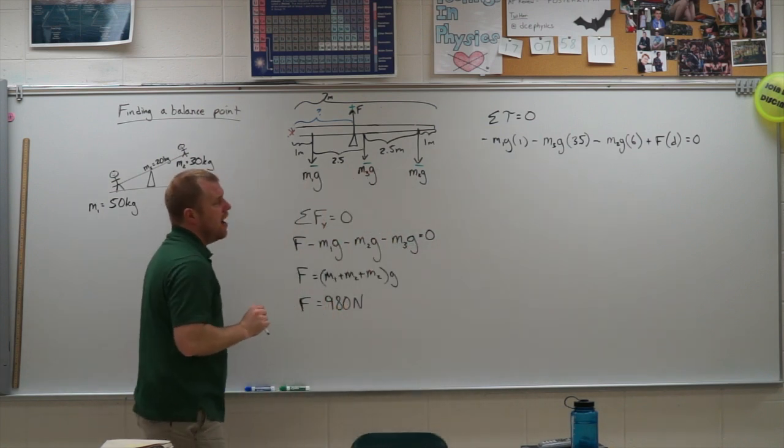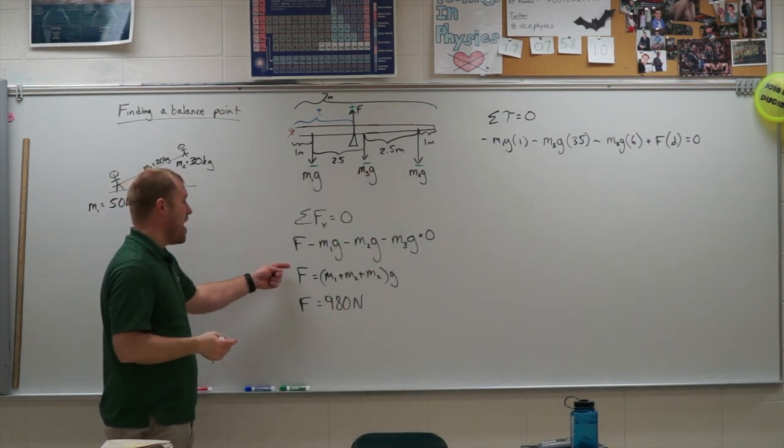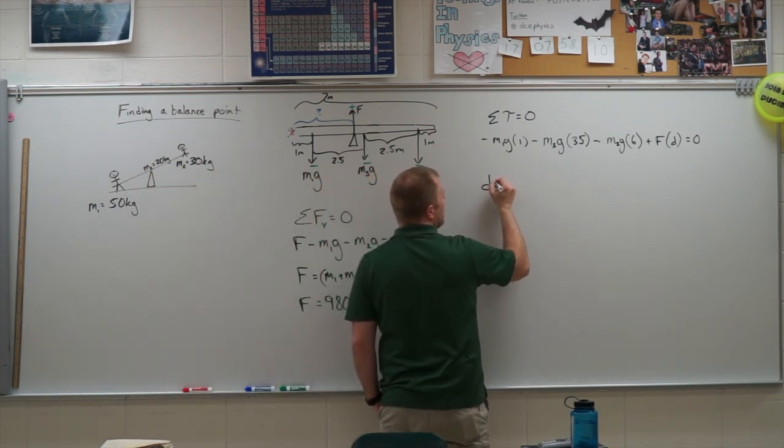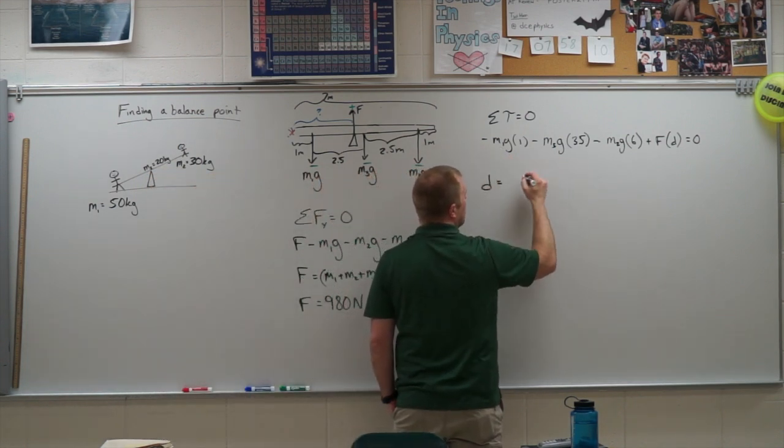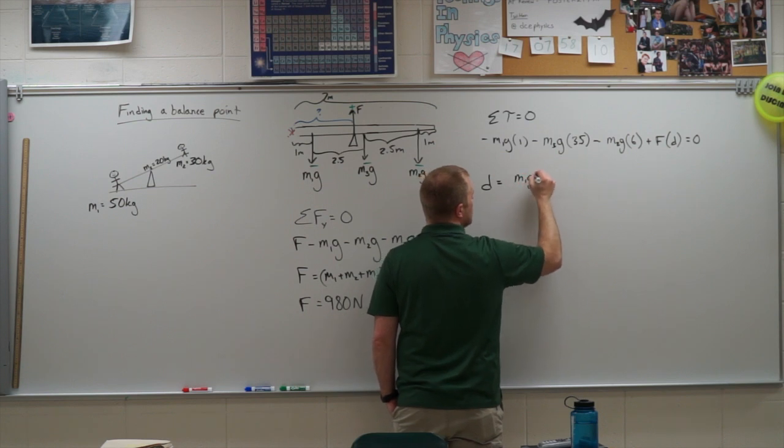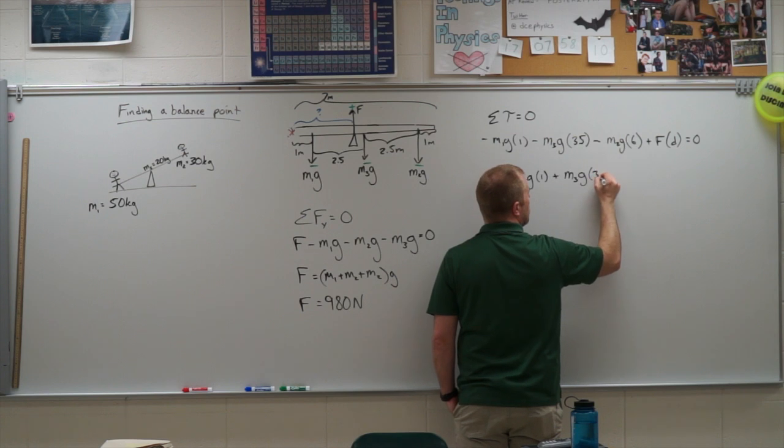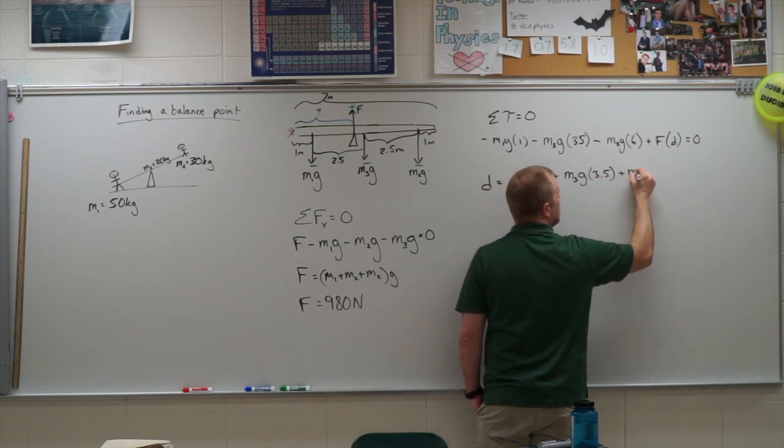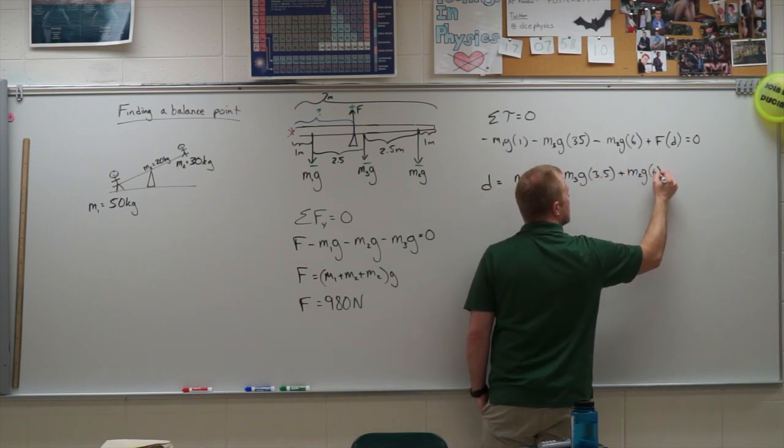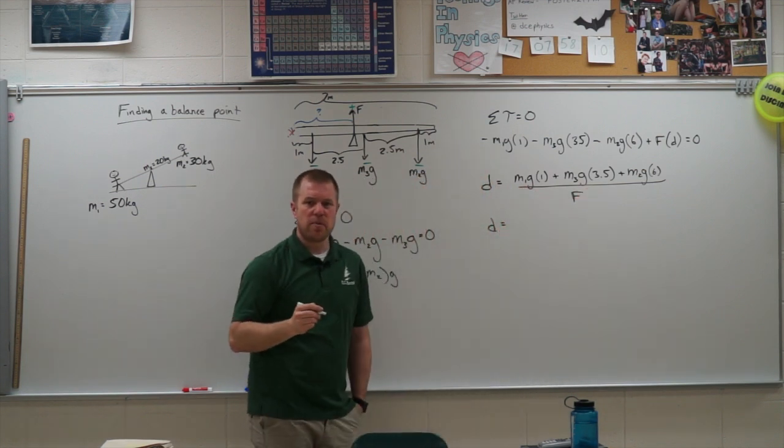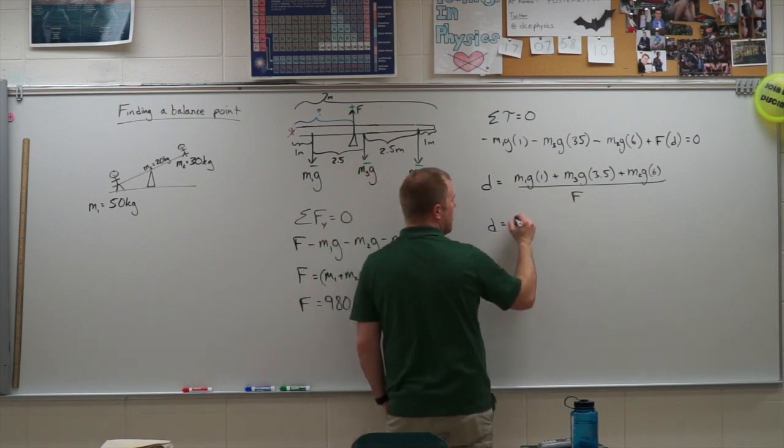So what I'm going to do now is I'm just going to solve for what is D. Since I know F and I know all the M's, I should be able to solve for D. So D is going to equal the sum of all this. So M1G times 1 plus M3G times 3.5 plus M2G times 6, all divided by that force. And when I go ahead and plug those numbers in, I get 4 meters.